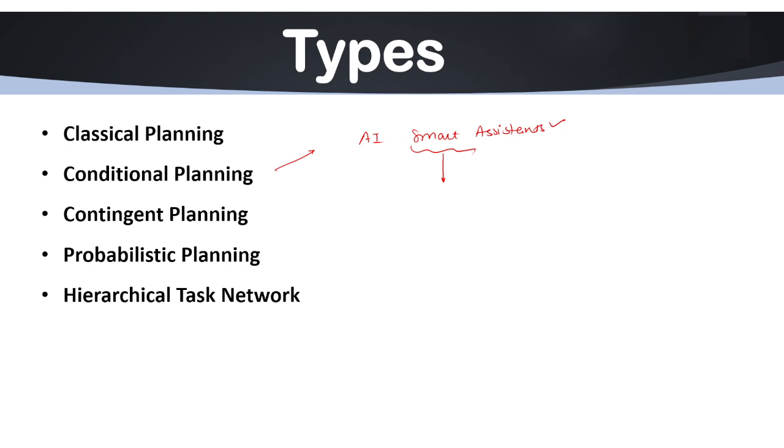Next we have contingent planning. Contingent planning is very much similar to conditional planning, but it uses real-time sensor data to make decisions. It is used in robotics, space exploration, and real-world navigation.